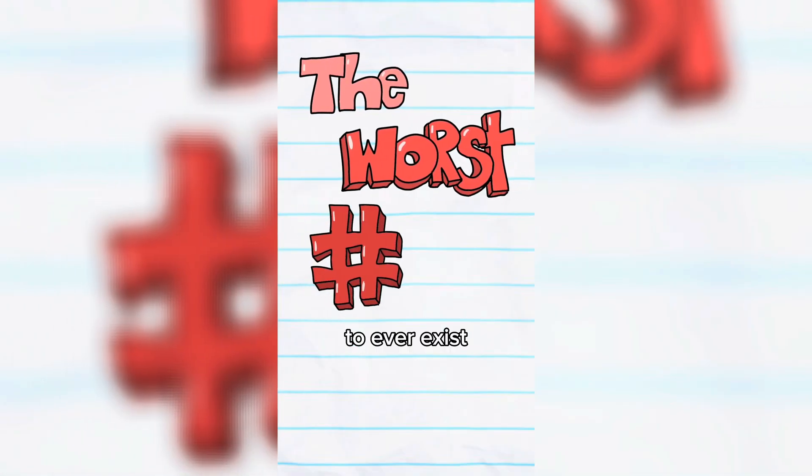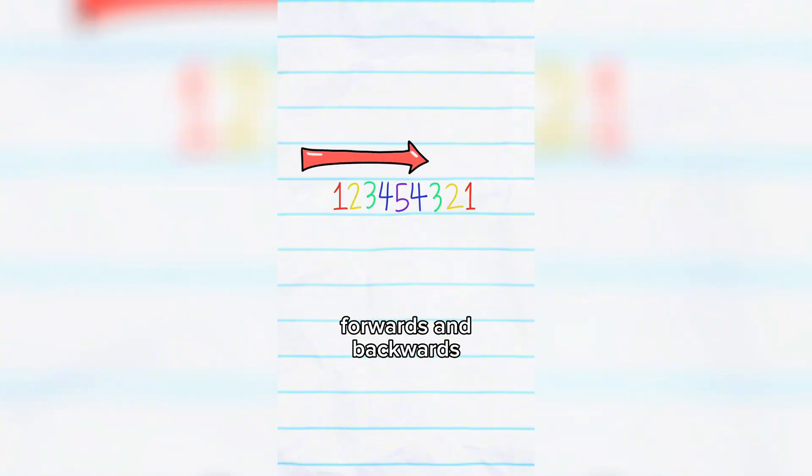1000000000000066600000000000001 might just be the worst number to ever exist. At first glance, it just looks like an ordinary palindrome where the numbers are the same forwards and backwards.